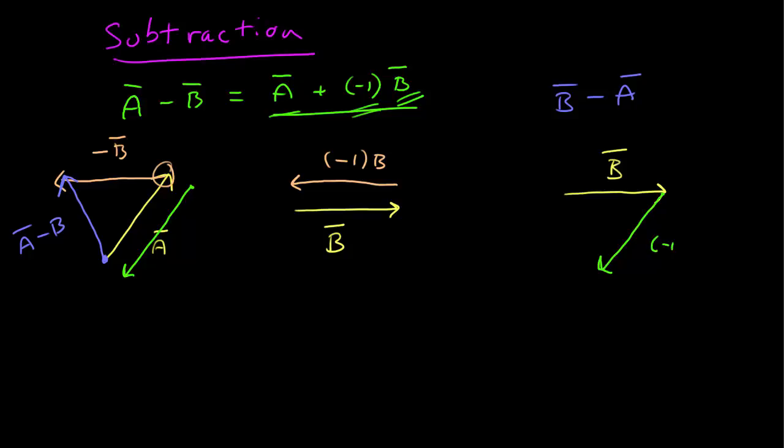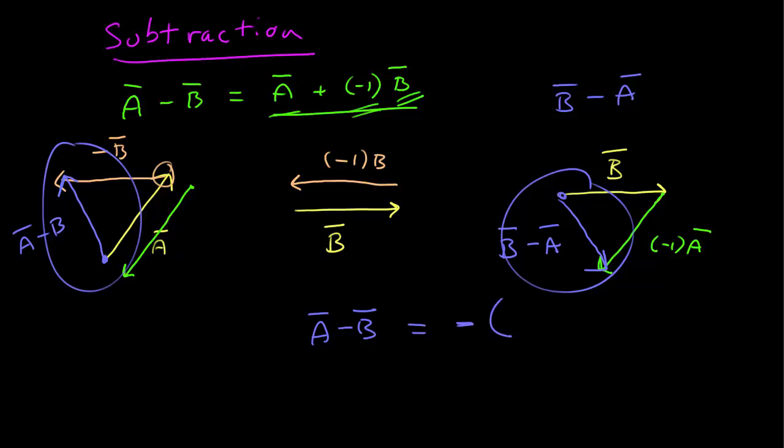And now the result is adding these two vectors, so that goes from the tail of b to the tip of a, and b minus a. So you'll note, if you look at a minus b and b minus a, but it is absolutely true that a minus b is equal to negative b minus a.